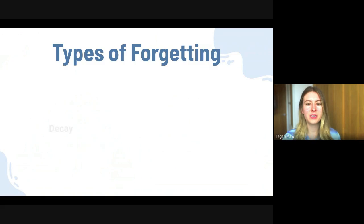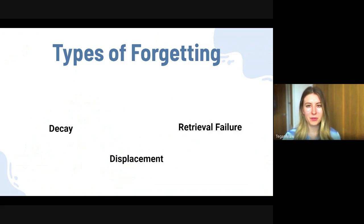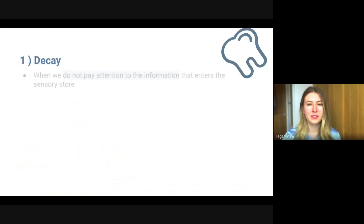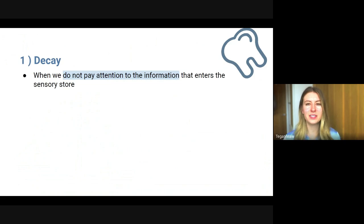Starting off with the three types, we have decay, displacement, and retrieval failure. Let's look at some definitions. Decay is when we do not pay attention to the information that has entered the sensory store.